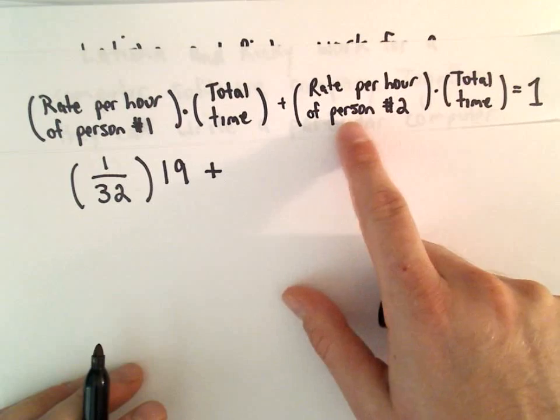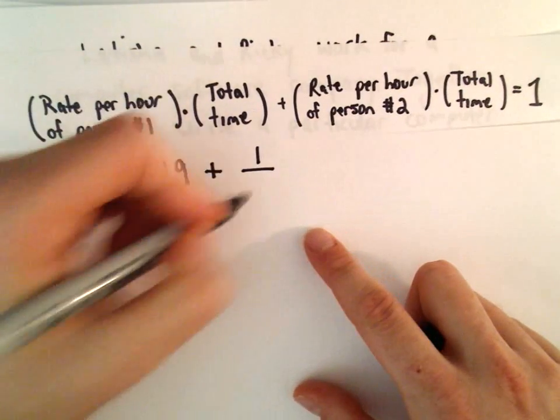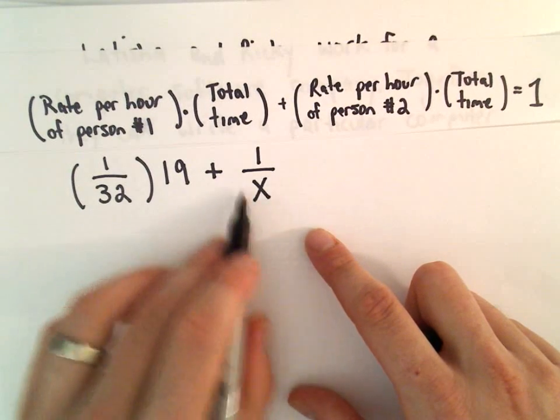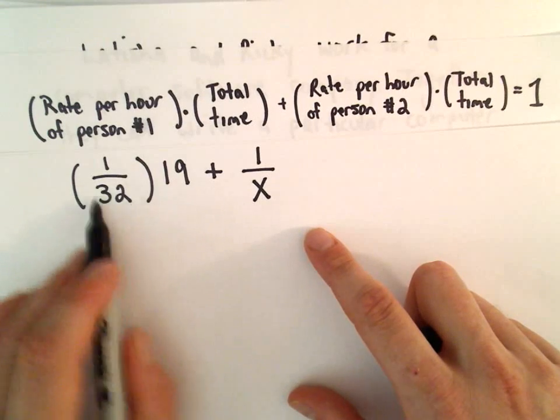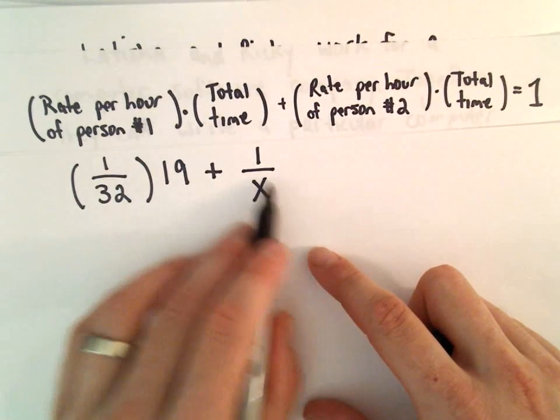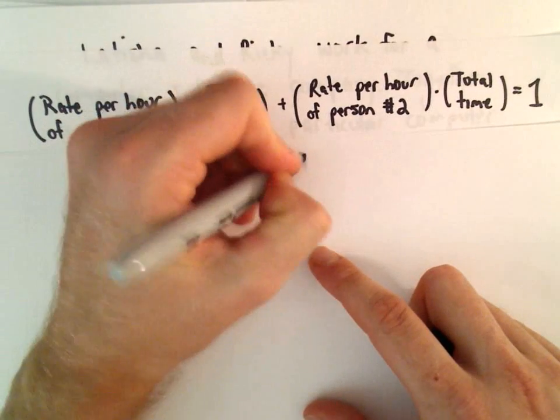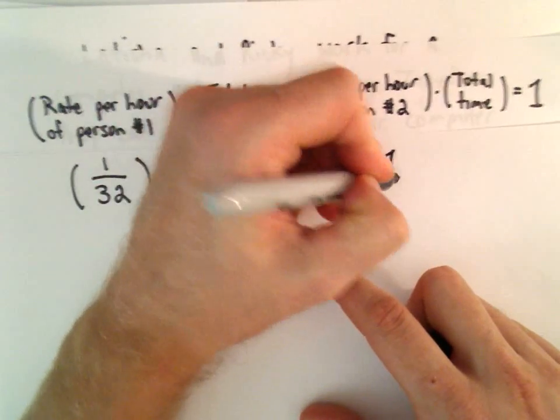We don't know the rate of the second person, of Ricky, so we'll call that 1 over x. Again, x will represent the number of hours it would take for him to do it alone. So just like it took Letitia 32 hours, her rate was 1 over 32, his rate will be 1 over x. Again, we multiply that by the total time, which is 19, and that equals 1.